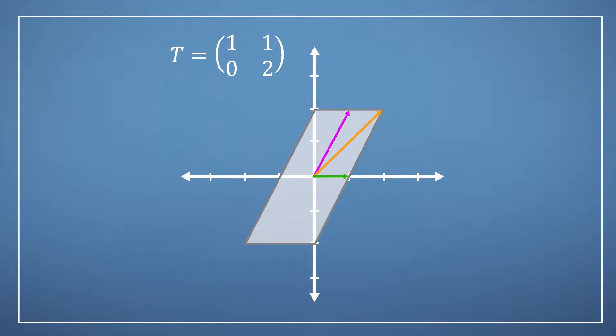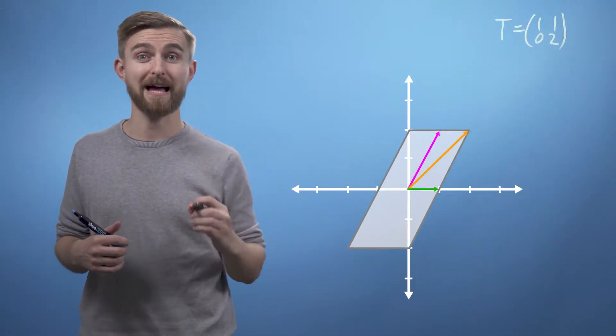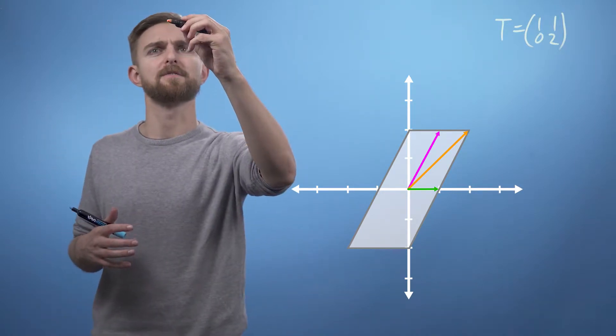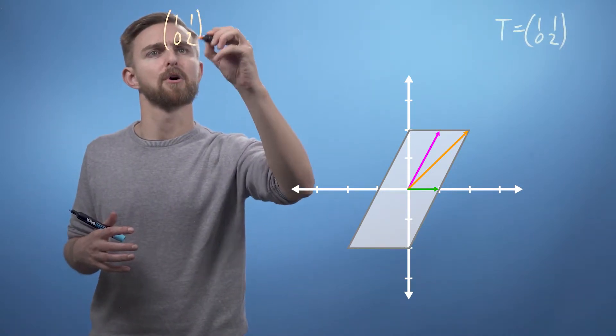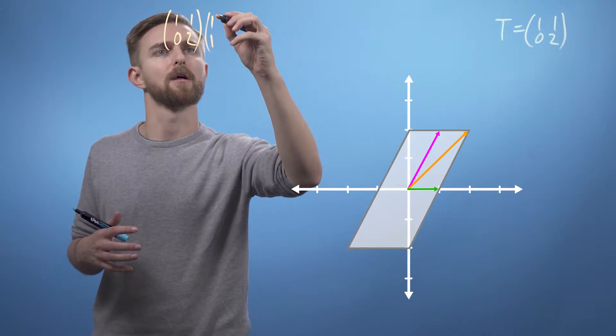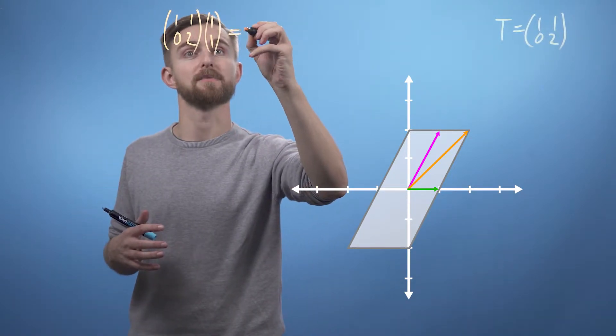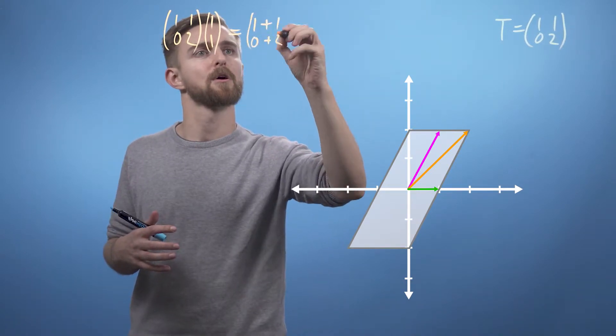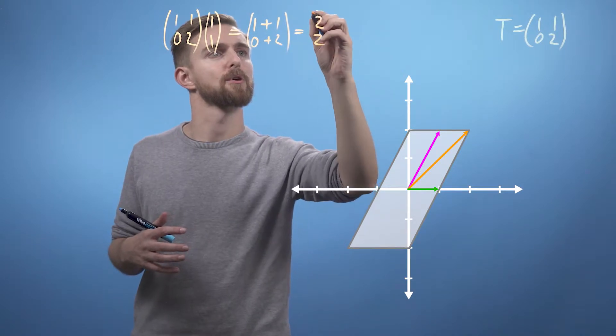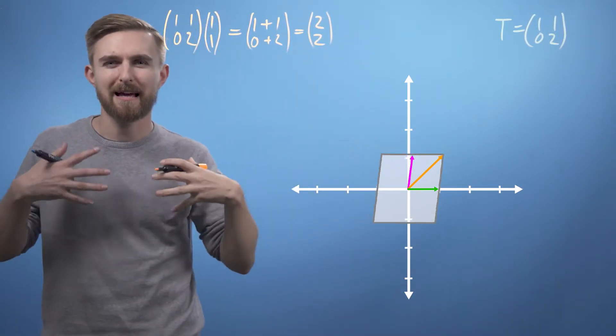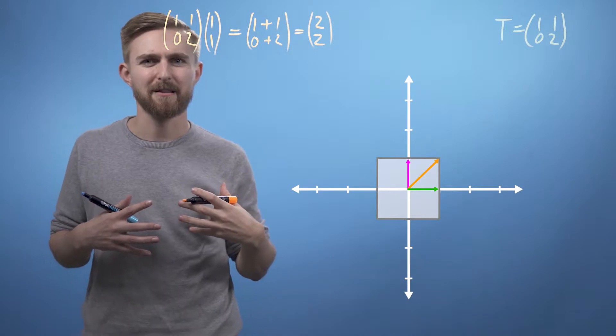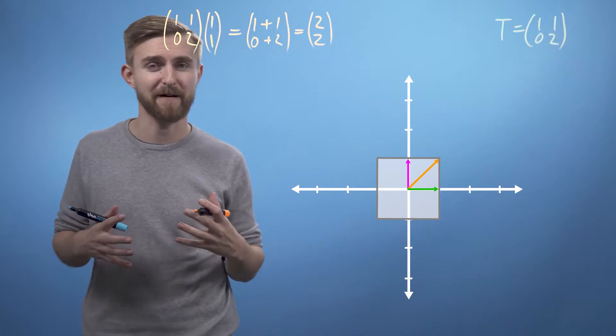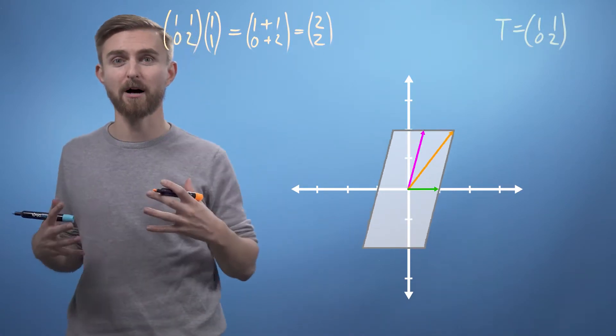will be moving to the point (1, 2). Let's also consider the orange diagonal vector to point (1, 1). Multiplying through gives us (1, 1; 0, 2) times (1, 1). Thinking about rows times columns, we get 1 plus 1 and 0 plus 2, which gives us (2, 2). It's interesting to consider that this particular transform could be decomposed into a vertical scaling by a factor of 2 and then a horizontal shear by a half step.